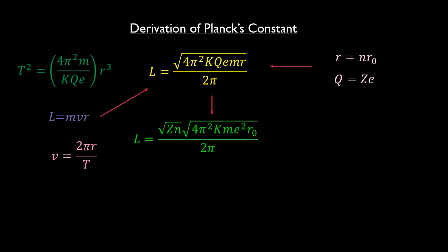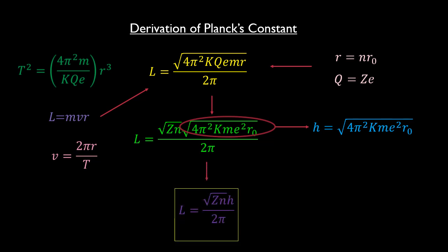Notice that I could factor out the 4π squared from the square root to cancel with the 2π in the denominator. But I won't do that because I want my equation to have a particular form. We let the bigger square root to be equal to a constant h so that the momentum becomes the square root of zn times h over 2π.